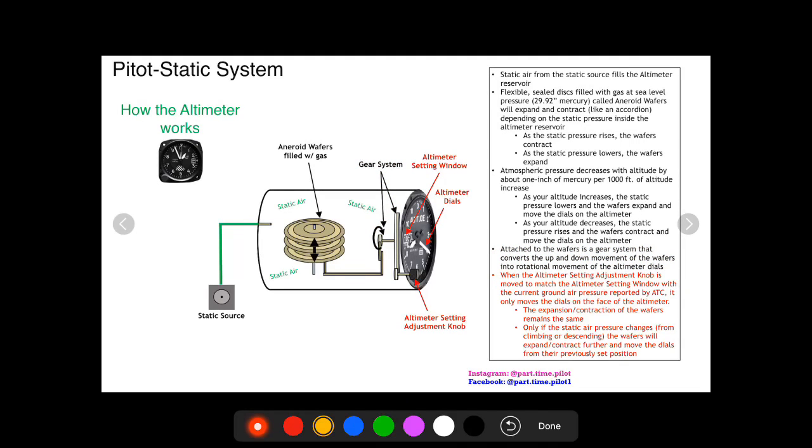There's another component that you as a pilot will use every single time you fly and that's the altimeter setting adjustment knob. ATC tells you the latest pressure update, you turn this knob until you see that new pressure update inside the altimeter setting window. So why do we do this?